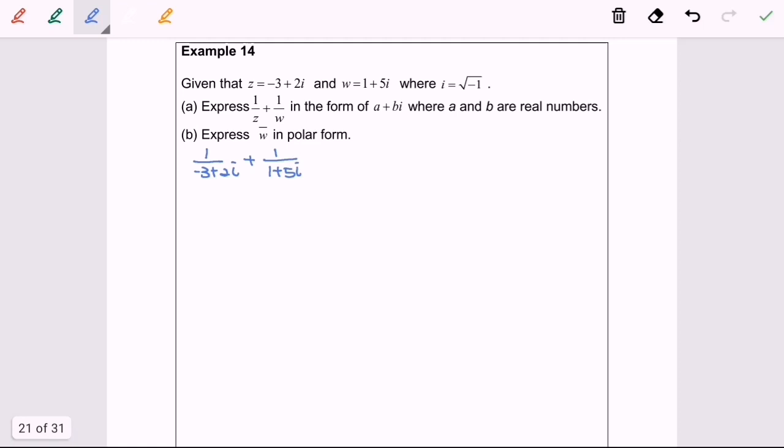The question asks us to express 1 over z plus 1 over w in the form of a plus bi, where a and b are real numbers.